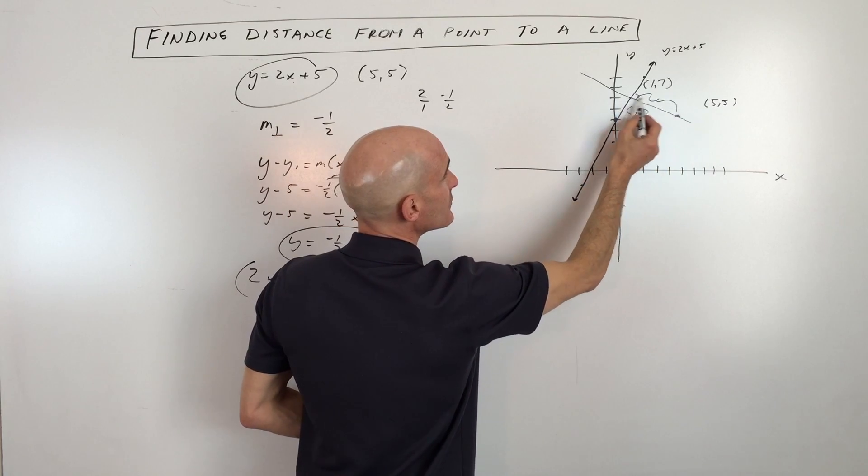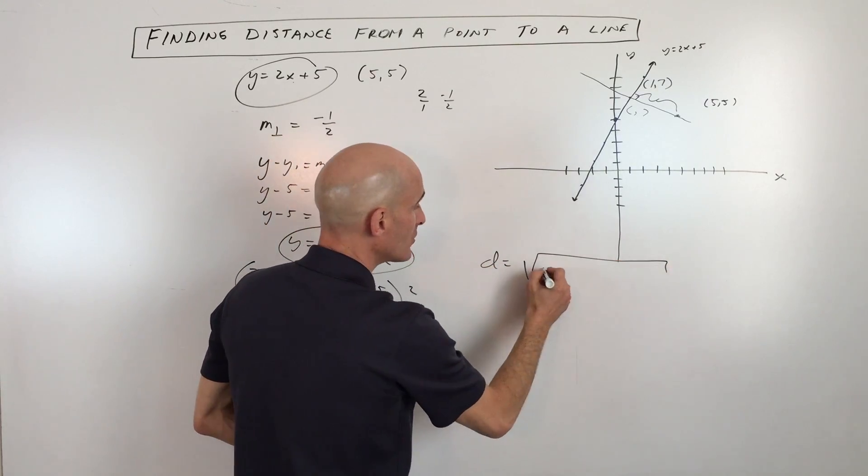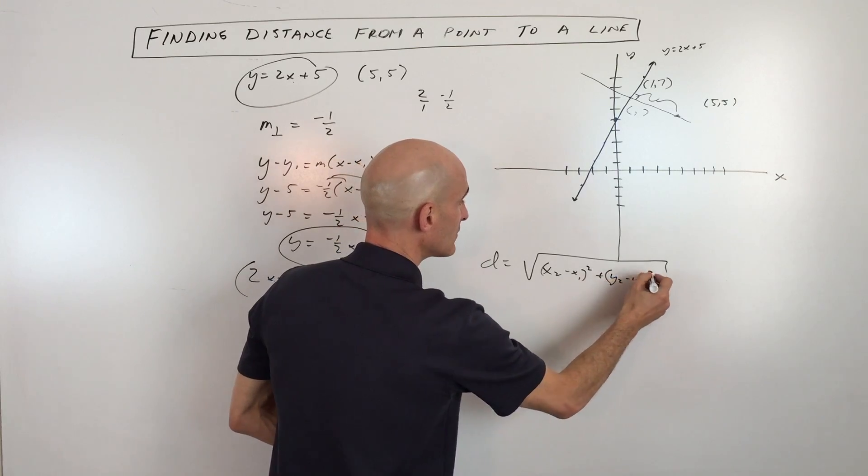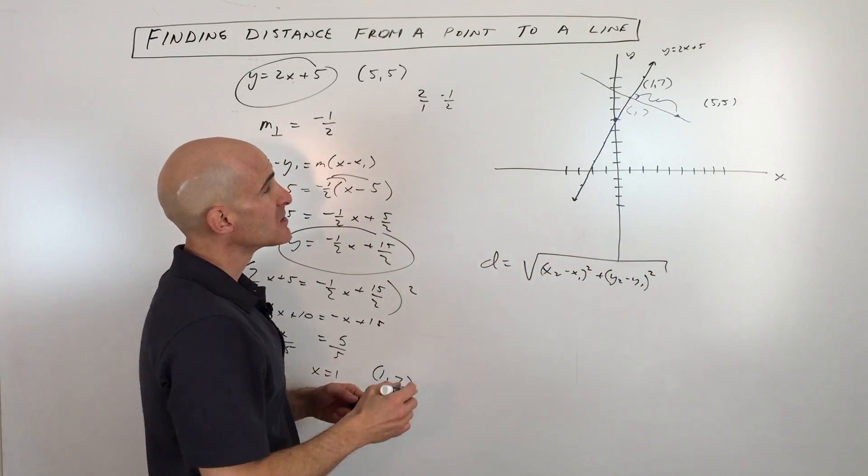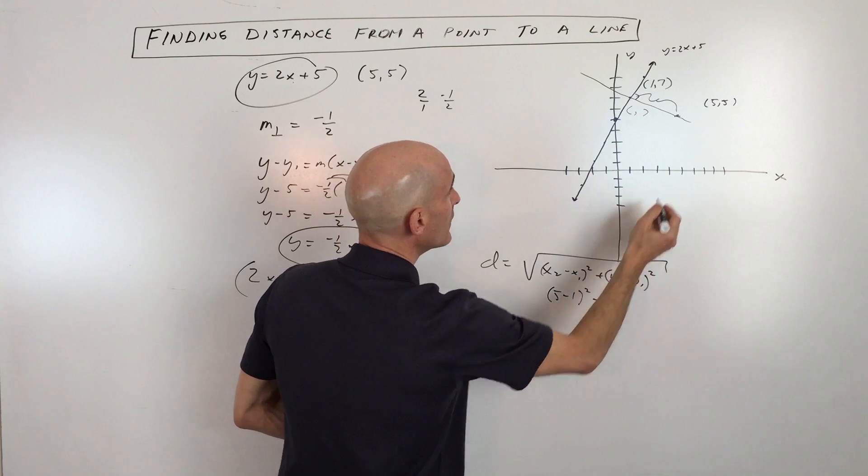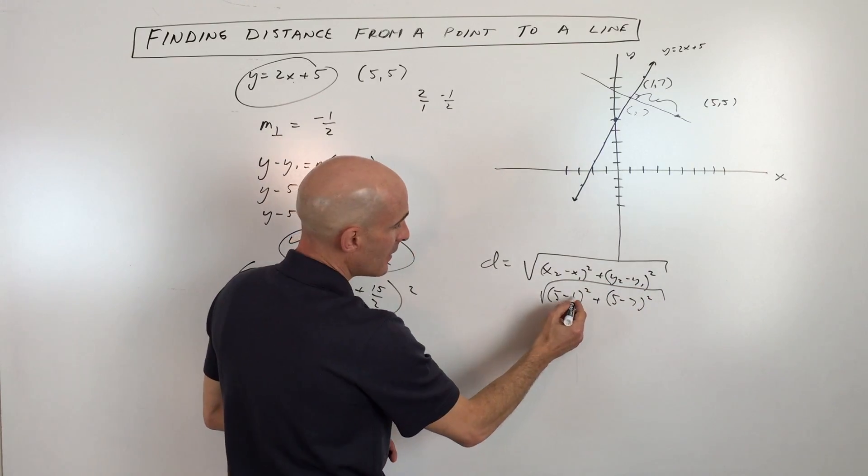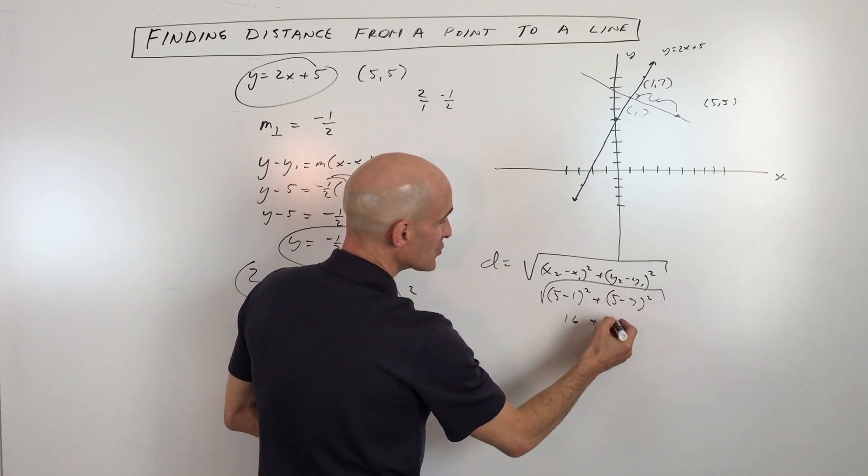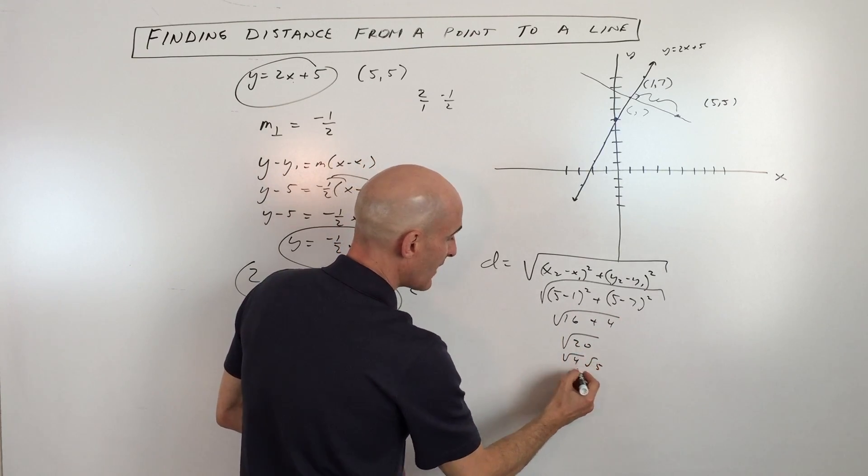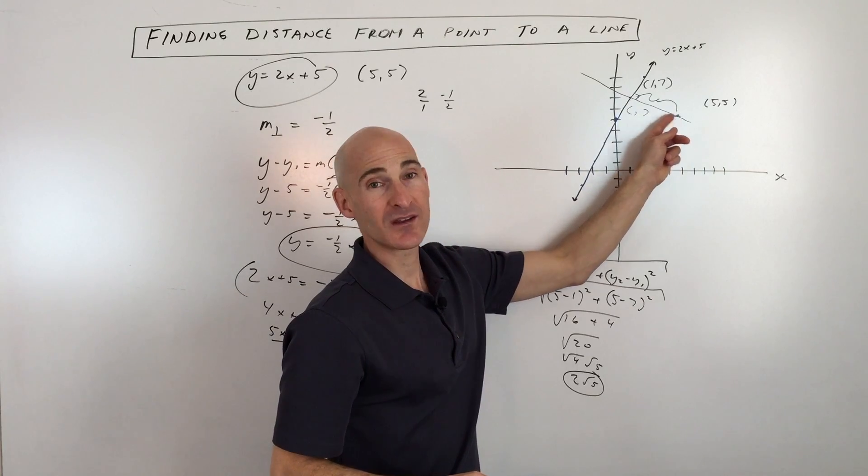Now all we have to do is find the distance from (1,7) to (5,5), and we've got it. So just a refresher, the distance formula is the square root of (x₂ minus x₁) squared plus (y₂ minus y₁), the quantity squared, and you take the square root of that. So in this case, we've got 5 minus 1 squared plus 5 minus 7 squared. Add those together and take the square root. So that's 4 squared, which is 16, negative 2 squared, which is 4. This is the square root of 20. Square root of 20 is 4 times 5. Square root of 4 is 2. So this is going to be 2 square root of 5. So that's the shortest distance from the point to the line.